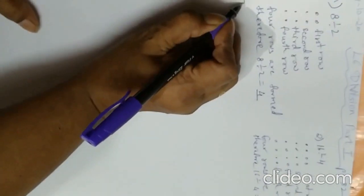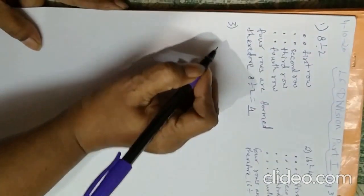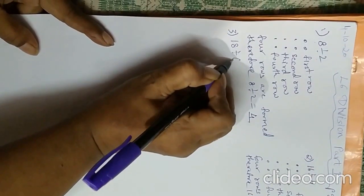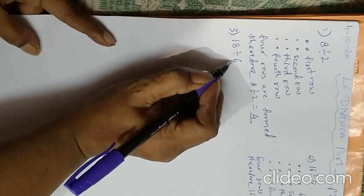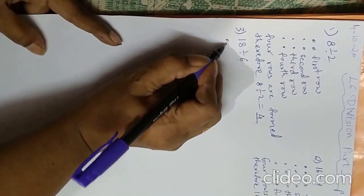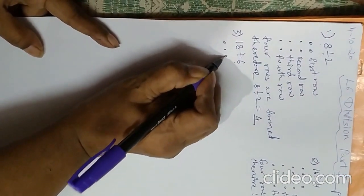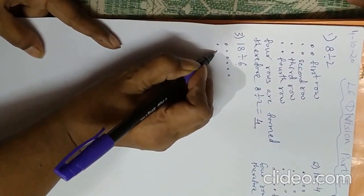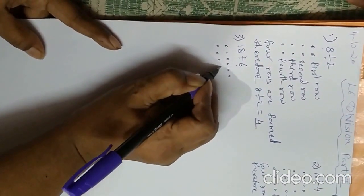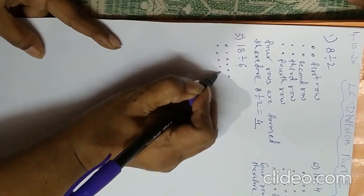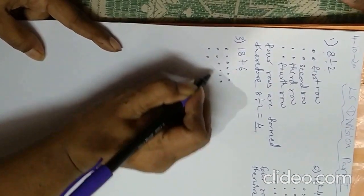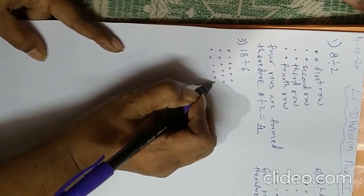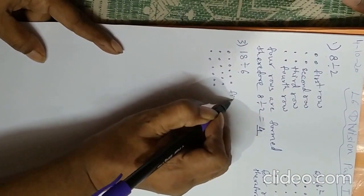Now the third sum: 18 divided by 6. That means we have to make groups of 6: 1, 2, 3, 4, 5, 6, 7, 8, 9, 10, 11, 12, 13, 14, 15, 16, 17, 18.